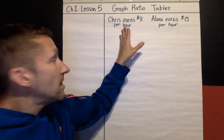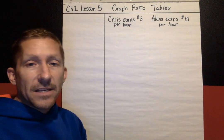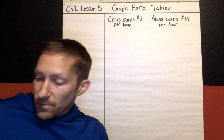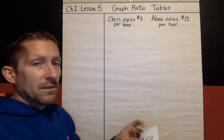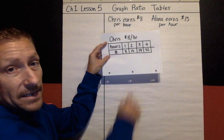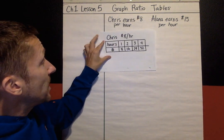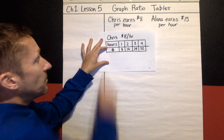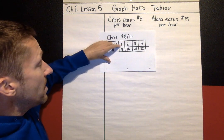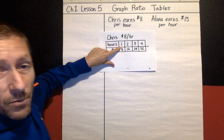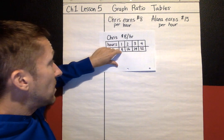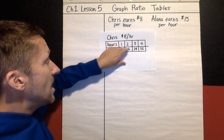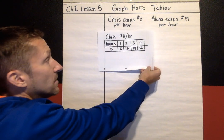We're going to start by looking at these two different ratios. Chris earns $8 per hour and Alana earns $15 per hour. Up till now, most of our ratio tables have looked like this — you don't have to write this down, I'm just showing that they've gone this way. If Chris earns $8 per hour, I could count by hours: after one hour he's made $8, two hours $16, three hours $24, and I could just extend that table.